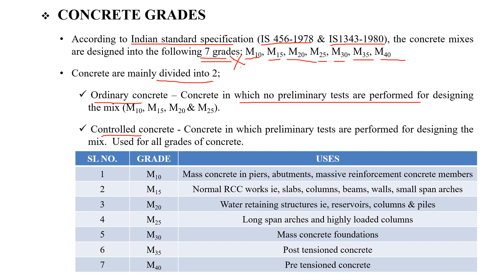For ordinary concrete, we use a nominal mix design. Grades M10, M15, M20, and M25 are ordinary concrete. For controlled concrete, we use a mix design based on preliminary testing. M30 and above are controlled concrete grades.